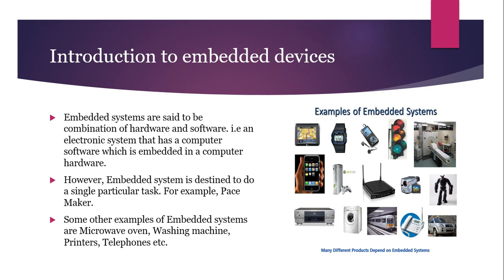For example, a pacemaker. This device keeps monitoring the heartbeat, so when the heart pump goes slow, it takes counteracting action and makes the heartbeat come back to a normal condition. Some other examples of embedded systems are microwave ovens, washing machines, printers, telephones, etc.